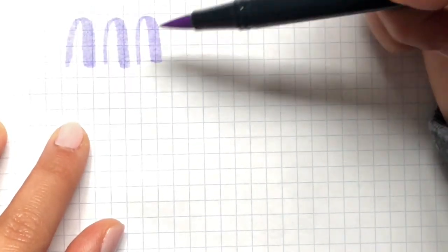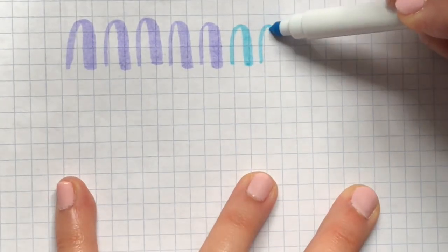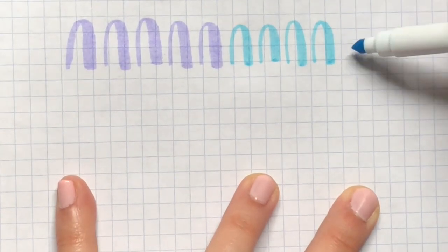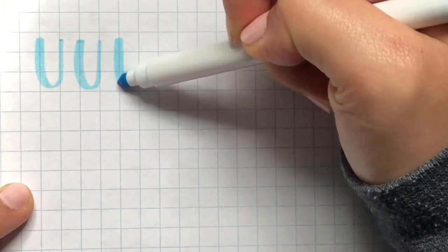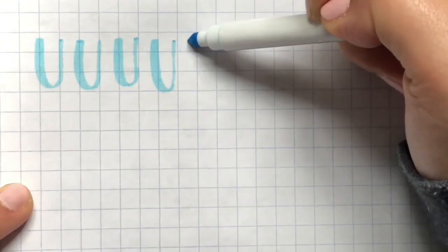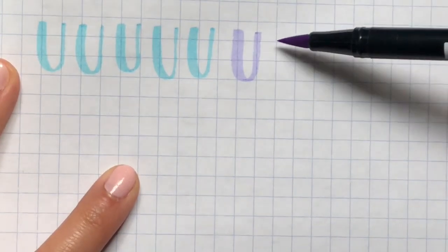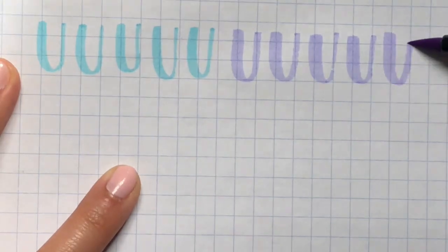So moving on to the next exercise we're gonna do some upside down U's. You want to practice using that same light touch thin strokes on the up and then thicker stroke on the down. You always want to do a thicker down stroke, so we're gonna practice doing the U's with a thick down stroke first and then lifting up lightly to do a lighter thinner up stroke.